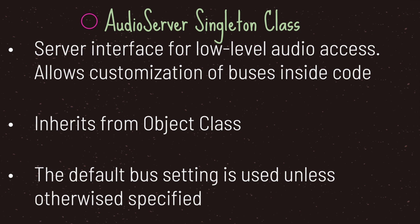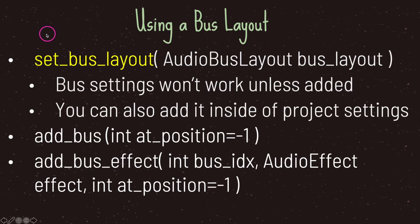The audio server singleton is a server interface for low-level audio access. It basically allows you to customize buses through code. Keep in mind that the audio server singleton uses the default bus setting unless otherwise specified. To change your audio bus setting you have the set_bus_layout method, which takes one argument — the AudioBusLayout data type, which is your audio bus layout resource file.